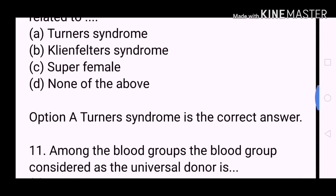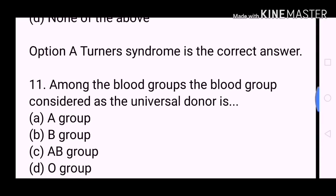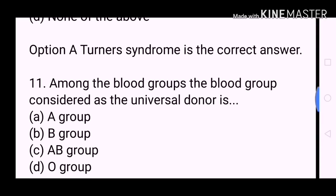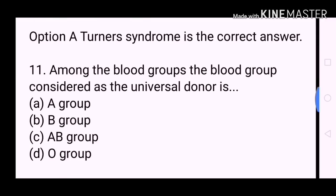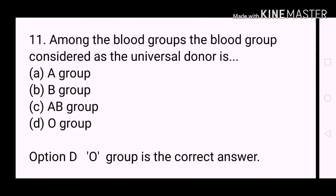Next question: Among the blood groups, the blood group considered as the universal donor is? A. A group. B. B group. C. AB group. D. O group. Option D, O group, is the correct answer.